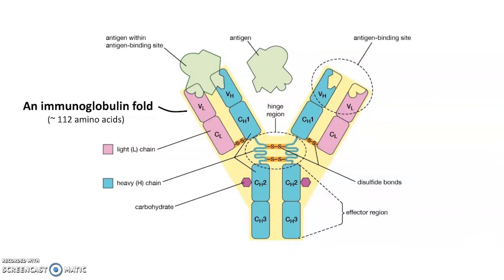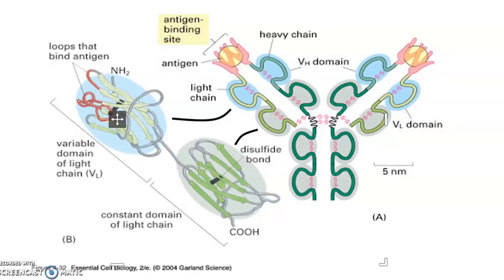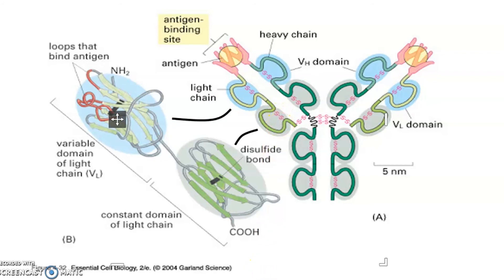Each one of these immunoglobulin folds is made up of approximately 112 amino acids. Here's another image that goes one step further because it relates this immunoglobulin fold to its real structure. Here's the disulfide bond that characterizes each of these immunoglobulin folds. What they're trying to show you is a four-stranded beta sheet opposite a five-stranded beta sheet, and the black bar here represents the disulfide bond that joins those two sheets together. They're all showing you the same thing, but in a slightly different way.